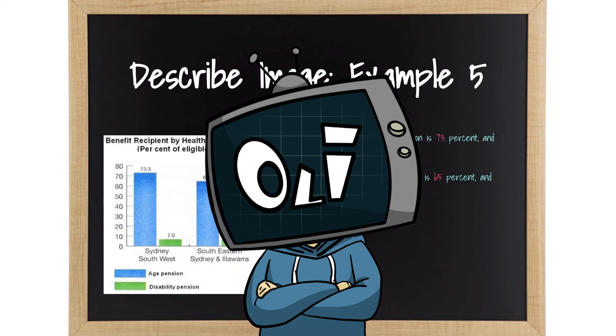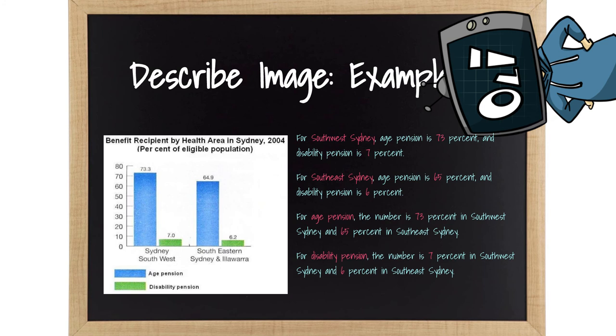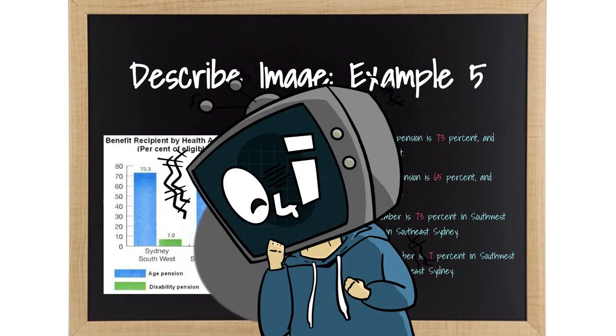In fact, here, I'll show you another way. For age pension, the number is 73% in Southwest Sydney, and 65% in Southeast Sydney. For disability pension, the number is 7% in Southwest Sydney, and 6% in Southeast Sydney. Here's another dare. Talk like this to your examiner when taking IELTS. You win if the examiner doesn't facepalm or give you a 4 for speaking.